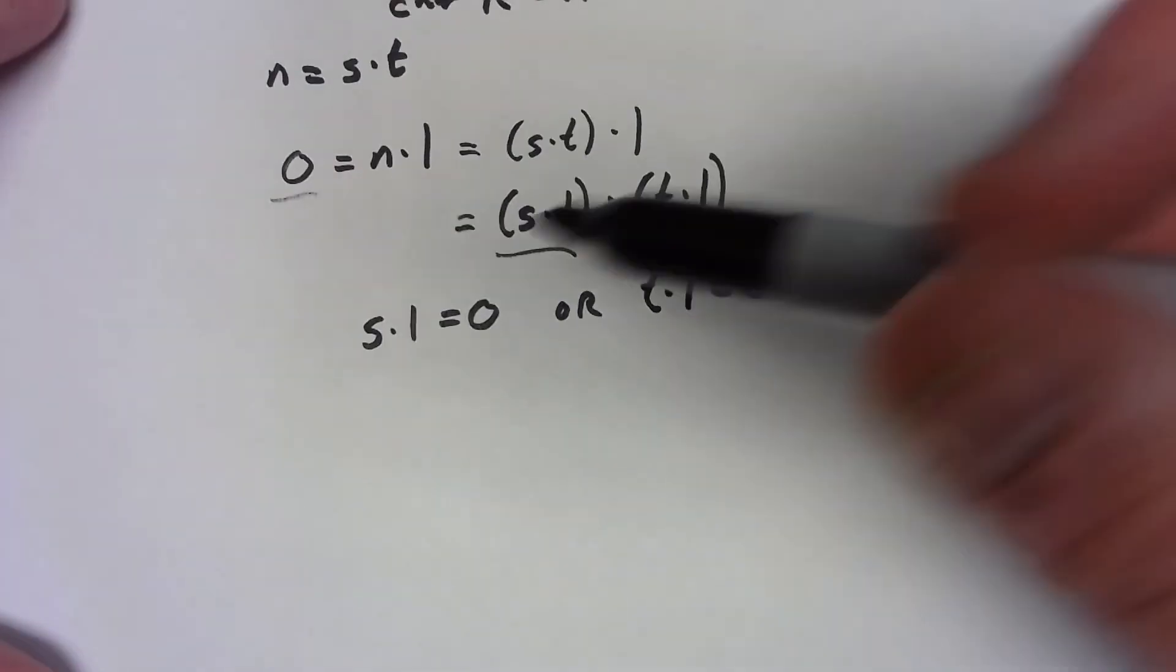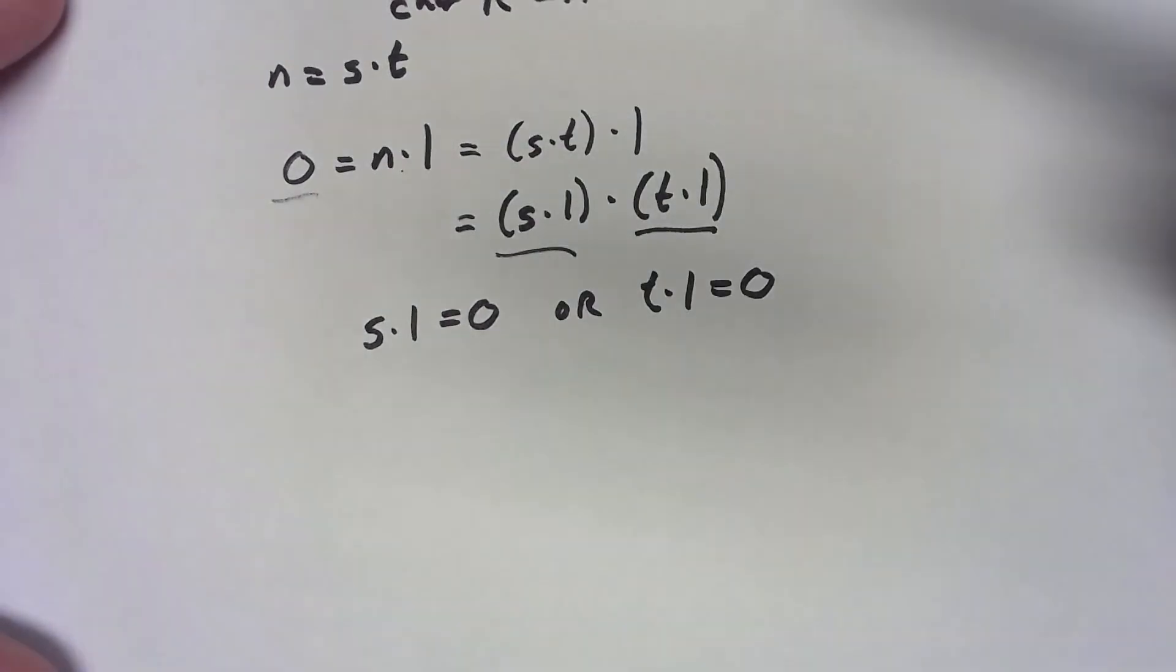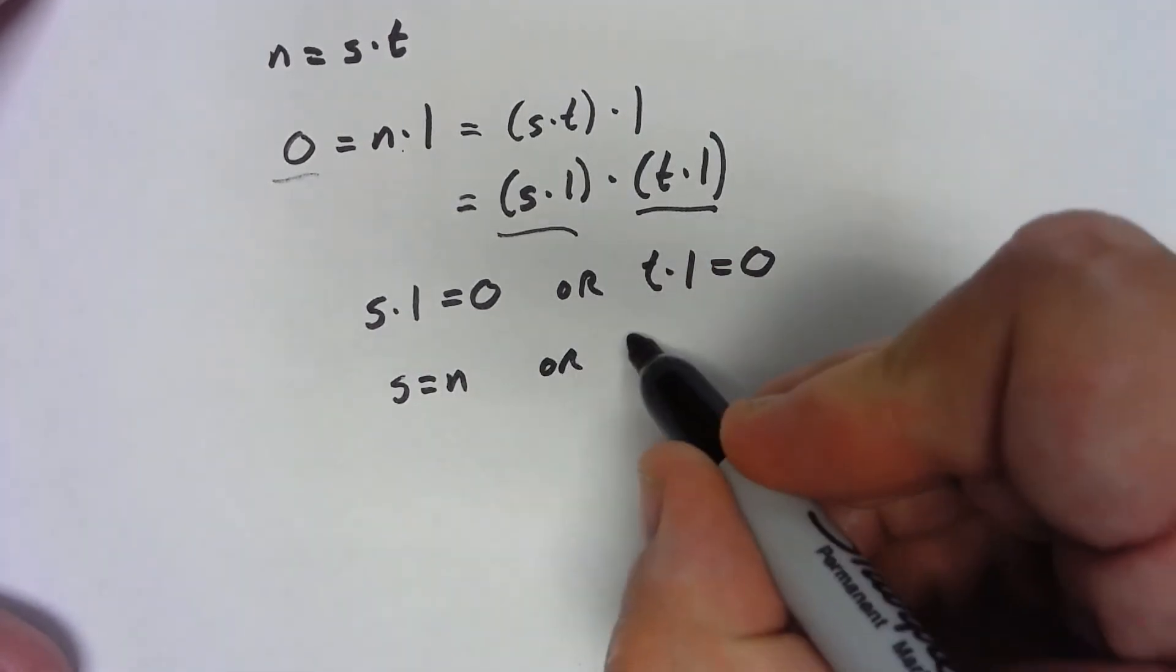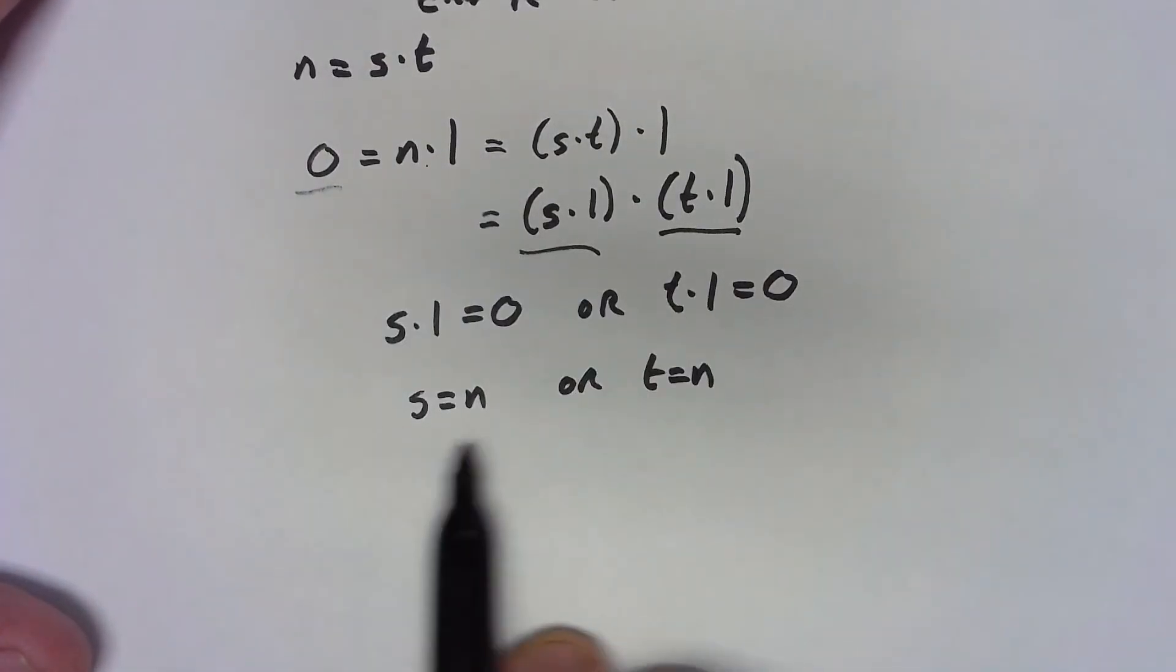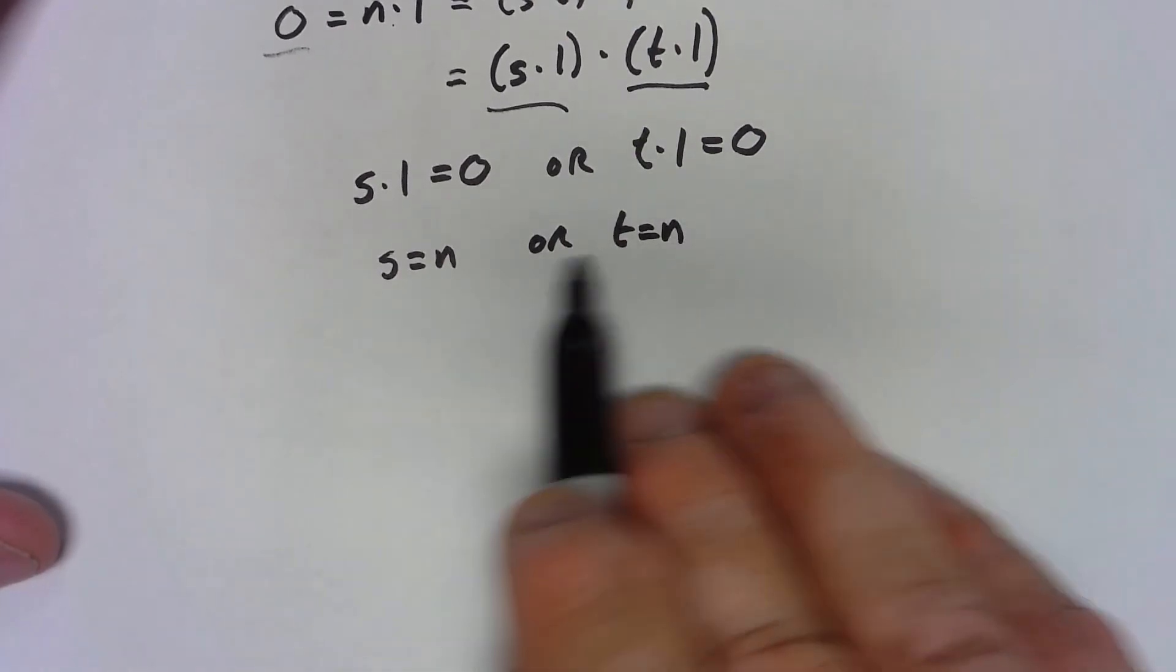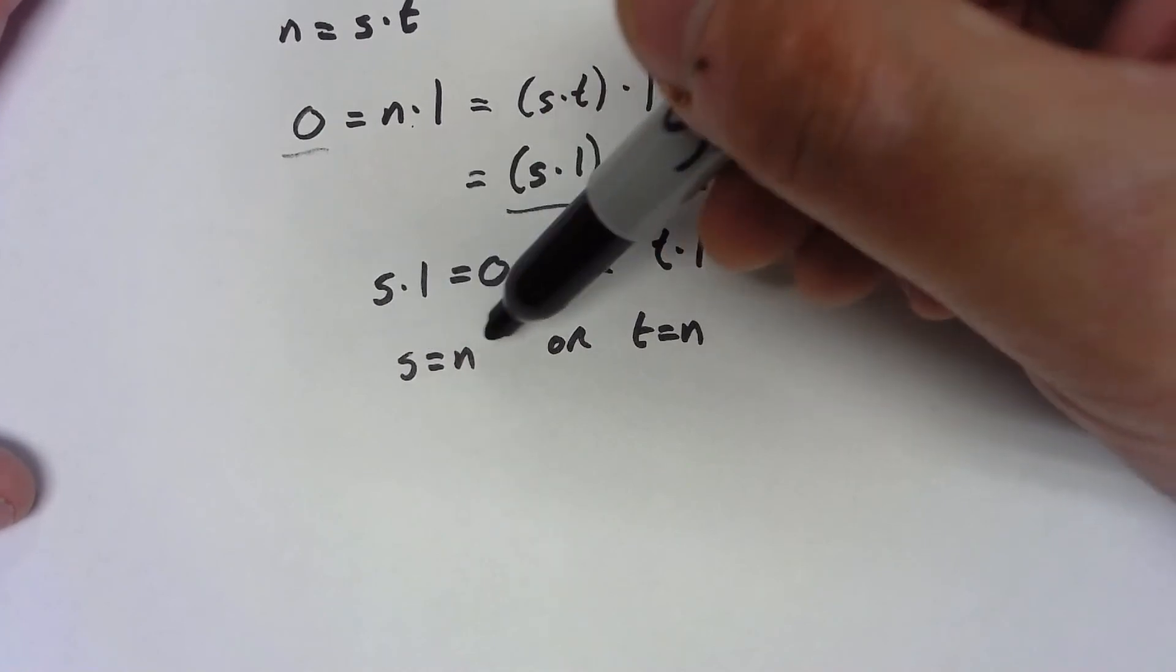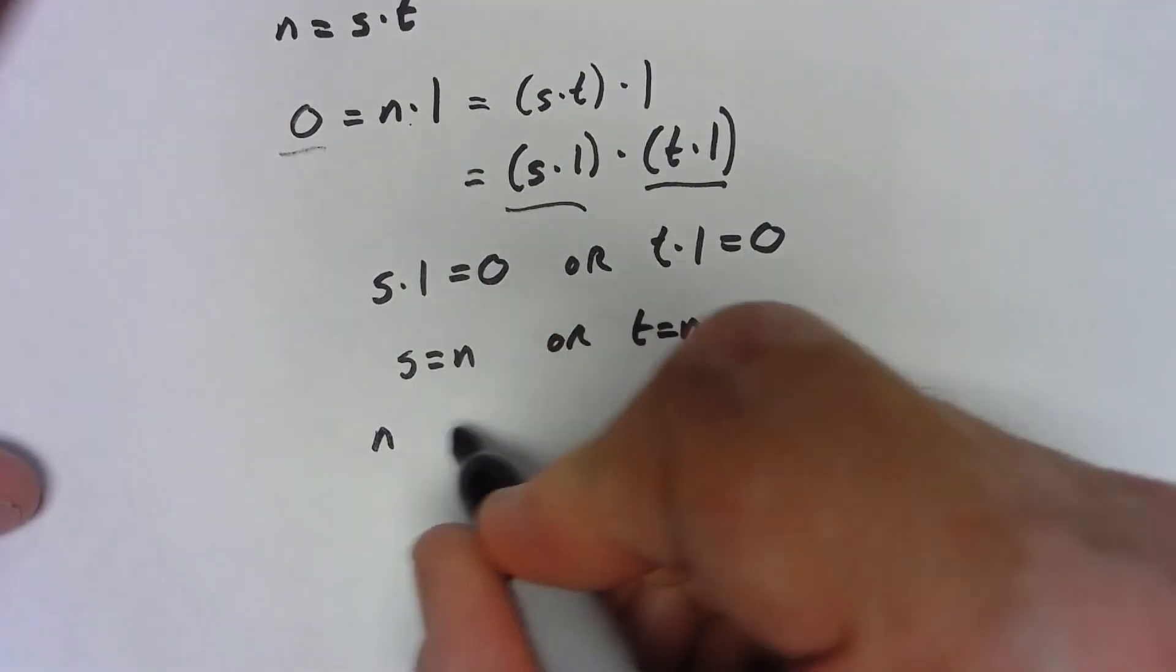But hold on—n was the smallest possible number such that when you take it times 1 you get 0. So the only possibility here is that either s is equal to n or t equals n, because these things have to be less than n to be divisors, and they multiply together and give us 0. But what we basically said is that if n is the product of two numbers, one of those numbers has to be n itself, which is exactly what it means for n to be prime.